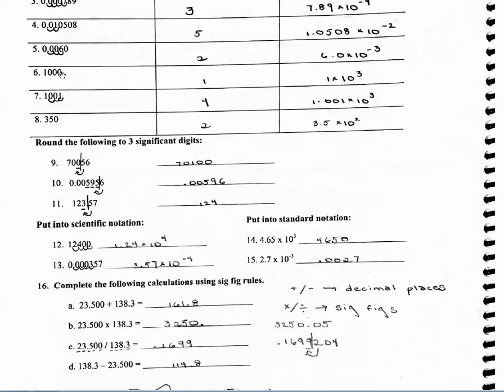For number 6, since I'm counting from right to left and I can't start counting on a zero, these three zeros are not significant, therefore you only have 1 significant figure. So when I write this in scientific notation, it's going to be 1 times 10 to the 3rd. Make sure not to write 1.0 because then that would be 2 significant figures.